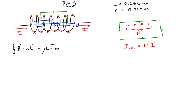This Ampere's loop is made up of four line segments. Path one is inside the solenoid, parallel to the central axis. Path two leaves the solenoid. Path three returns in the opposite direction but parallel to the central axis. Path four returns back into the solenoid. These four segments form the integration path we use to determine the magnetic field.